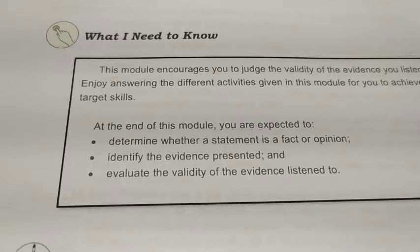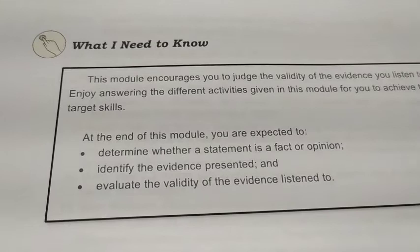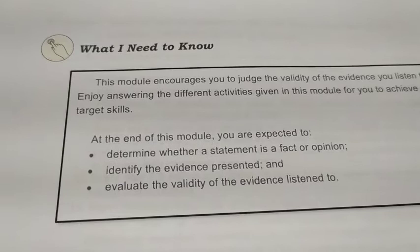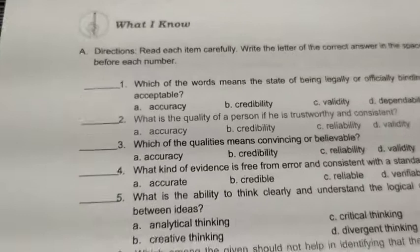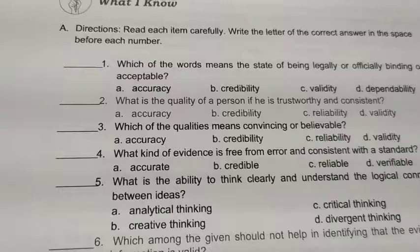We have three objectives. The first one is to determine whether a statement is a fact or opinion. Second, identify the evidence presented. And third, evaluate the validity of the evidence listened to. In the 'What I Know' part, you will read each item, then select or choose the letter of the correct answer on your answer sheet.